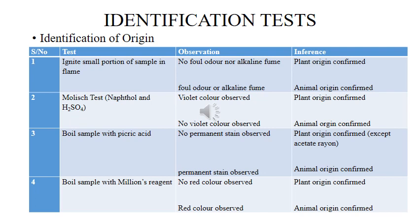In order to ensure purity and avoid substandard fibers, it's important to test and confirm the origin of different fibers. If you ignite a small portion of fiber in a flame and you do not get any foul odor or alkaline fume, it confirms that the fiber is of plant origin. But if you observe a foul odor or alkaline fume, it confirms that the fiber is of animal origin.